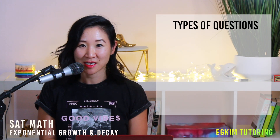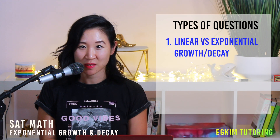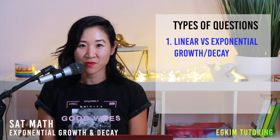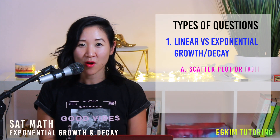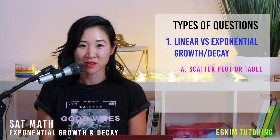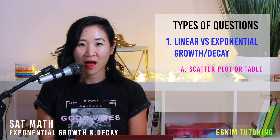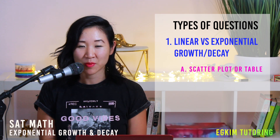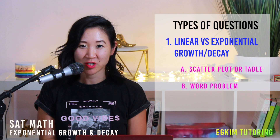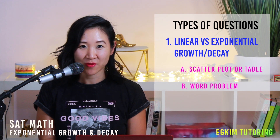Going back to the three types of questions usually asked — the first thing they like to test you on is whether you understand the difference between a linear graph versus an exponential graph. They ask this in two forms: first, they give you a scatter plot or a table of numbers and you have to figure out whether the rate of change is linear or exponential. Similarly, they'll give you a word problem describing a rate of change and you have to figure out the same thing.